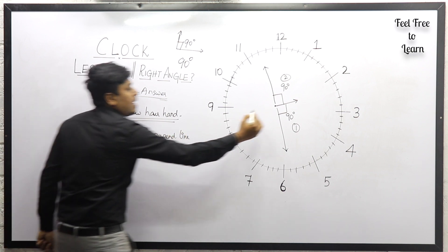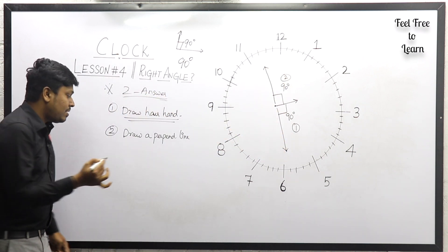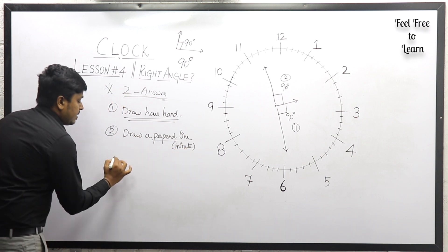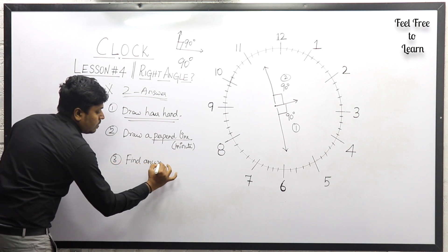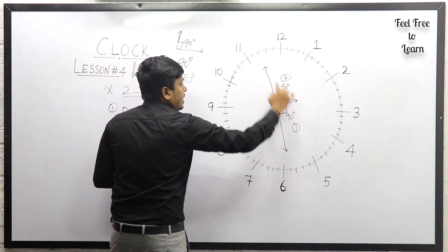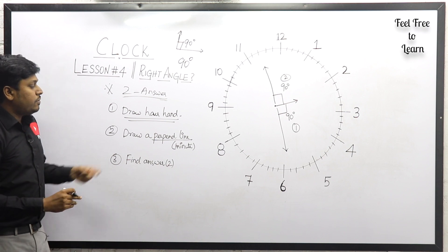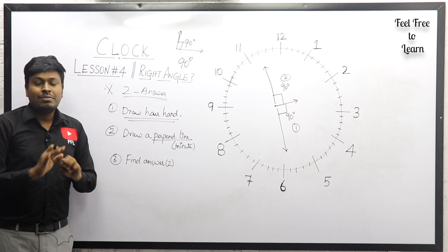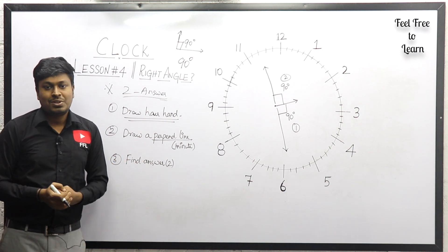Once you draw the hour hand, draw a perpendicular line to it which represents the minute hand. Step number three: find both answers. Take one perpendicular direction as possible one and the other as possible two, then find the answer for each. If you follow these three steps properly, finding the answer for right angle questions will be very simple.